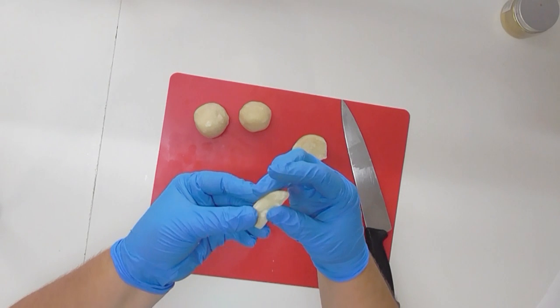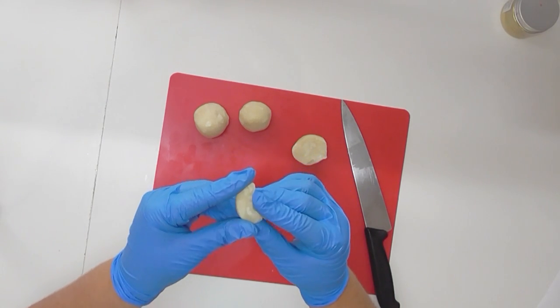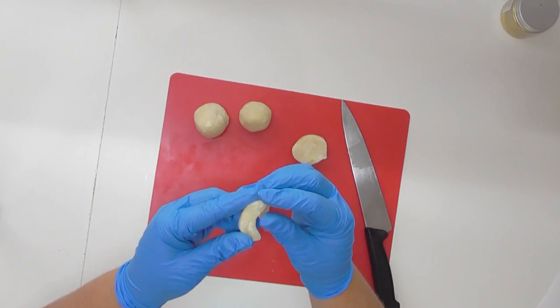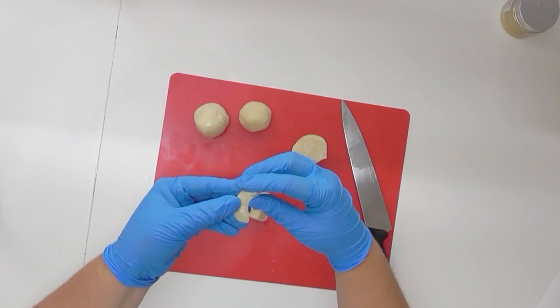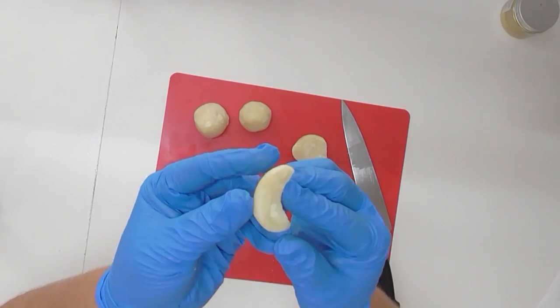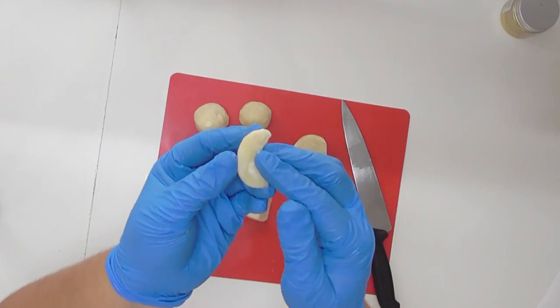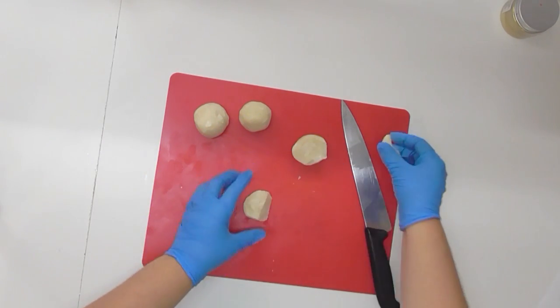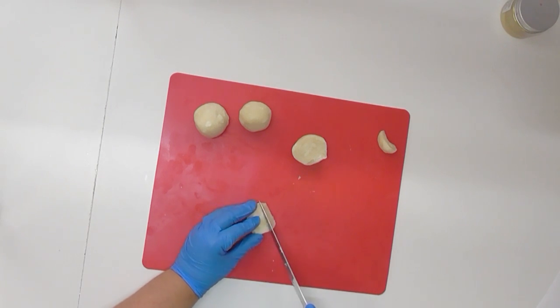And then what I'm going to do just in the middle here is just going to manipulate it with my fingers just a little bit to make it look like the middle has been taken out, so it's on a bit of a sort of crescent shape. So I'll get some of these also chopped up.